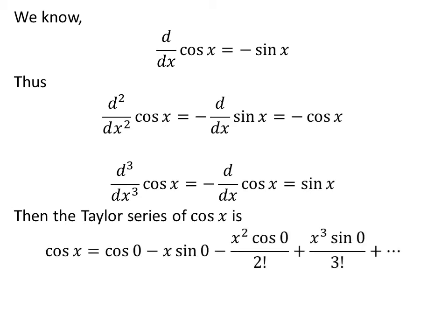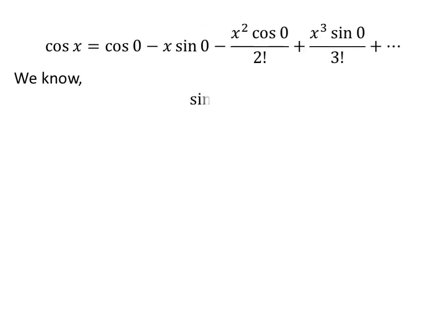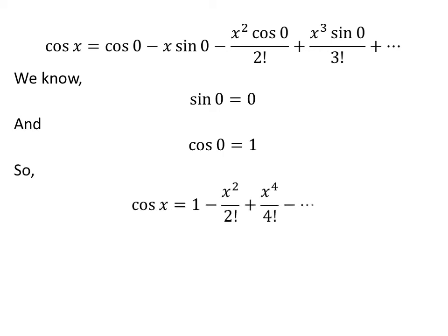Applying these facts, the Taylor series of cosine of x equals: cosine of 0, minus x times sine of 0, minus x squared times cosine of 0 upon factorial of 2, plus x cubed times sine of 0 upon factorial of 3, plus so on up to infinity. Since sine of 0 is 0 and cosine of 0 is 1, the Taylor series of cosine of x simplifies to: 1 minus x squared upon factorial of 2, plus x to the power of 4 upon factorial of 4, minus so on up to infinity.